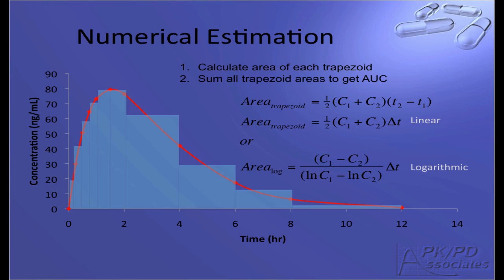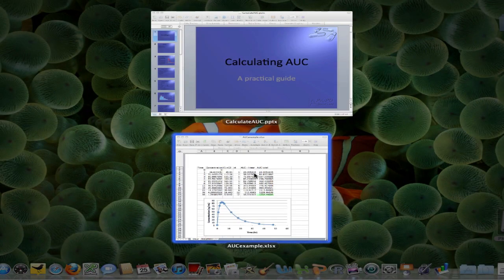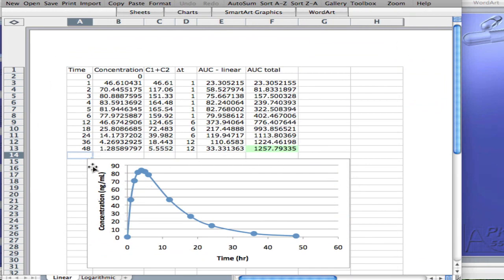Let's look at a simple example of how to calculate AUC. As you can see here in this Excel spreadsheet, I have a column of data which includes the time, and then includes the concentration. I then take the sum of the two concentrations, and then the time interval, and then we can calculate the fractional area under the curve by summing, by taking the sum, dividing by two, and then multiplying by the delta t. That gives us the linear AUC estimate for that interval from zero to one hours. We can do that for each discrete interval. Then we can sum the intervals together to get a total area under the curve of 1,257.79335. That would represent the area under the curve using the linear trapezoidal method of this PK concentration curve.